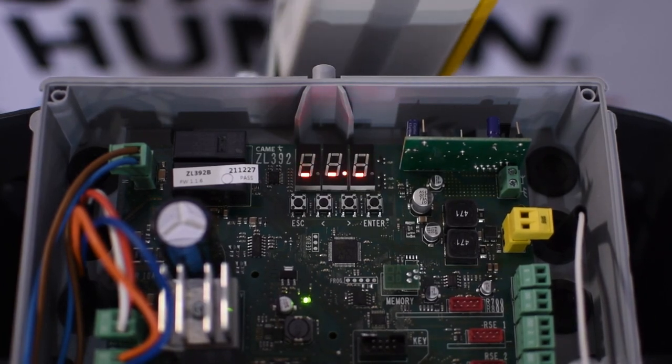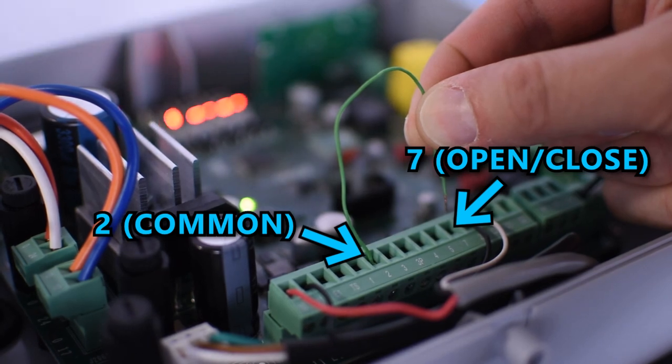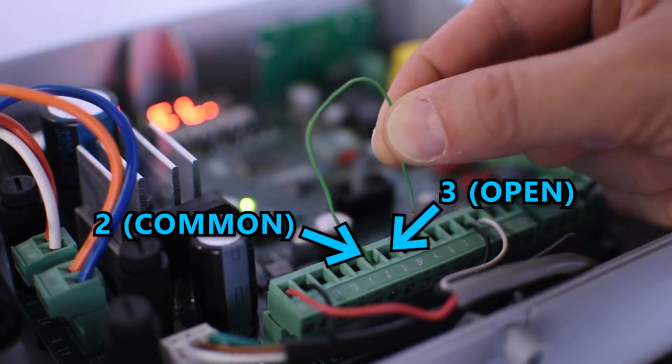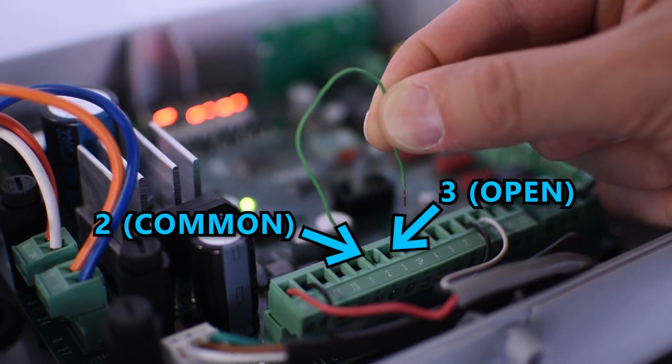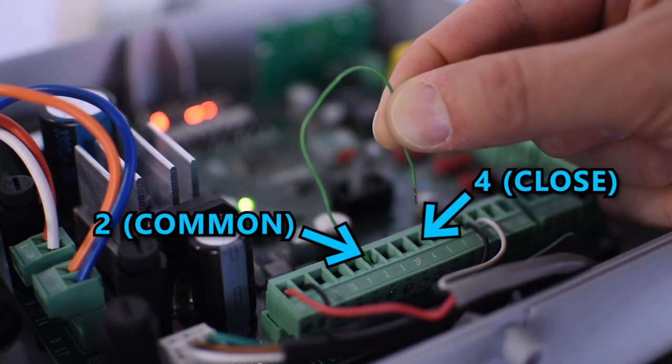To send a command using an external device like a push button you can use pins 2 and 7 as a normally open contact. Also the pins 2 and 3 can be used to send an open command, and pin 4 is for a closing command.